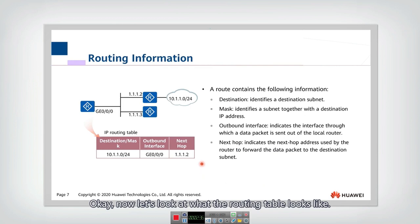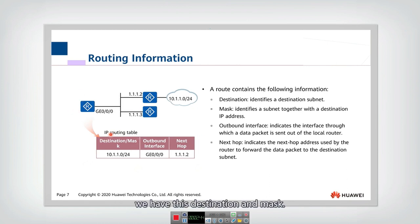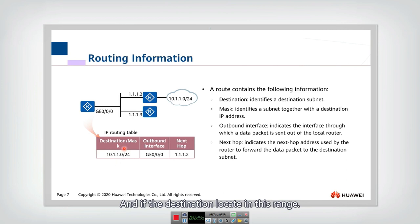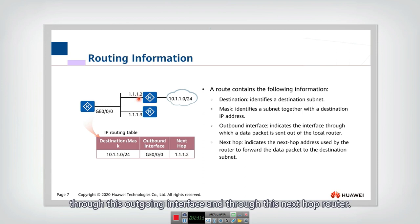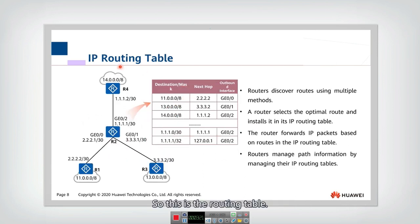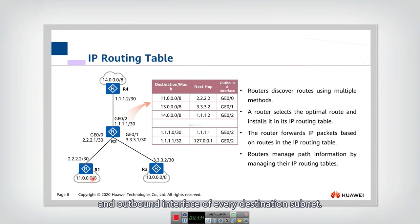Now let's look at what a routing table looks like. This is the routing table of this router. You can see that first we have the destination and mask, which identifies the IP address range for the destination. If the destination falls in this range, the router will forward the packet through the outbound interface to the next hop. The next hop will be a specific interface. So through the outgoing interface and the next hop router, the packet to a given destination will be forwarded. The routing table identifies the next hop and outbound interface for every destination subnet.